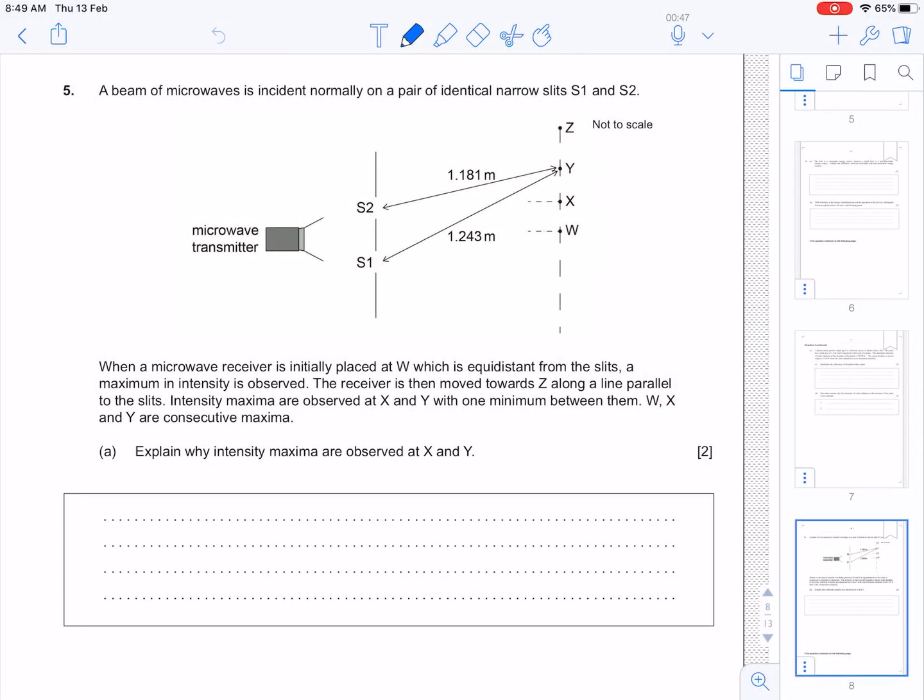Okay, question 5 in the SL paper, or question number 6 in the HL paper. A beam of microwaves is incident normally on a pair of identical narrow slits S1 and S2.